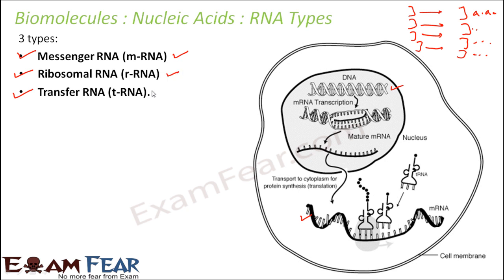What will ribosomal RNA do? Ribosomal RNAs are present in the ribosome — they are like a central component of the ribosome. The messenger RNA will only carry the information from DNA to the ribosome, but in the ribosome there has to be somebody who can actually create the proteins. So the actual creation of proteins is done by ribosomal RNA.